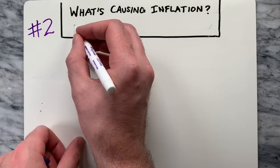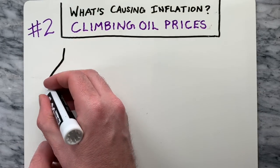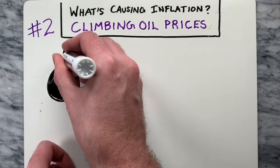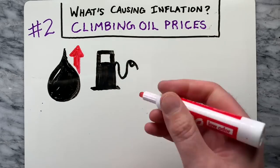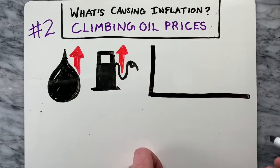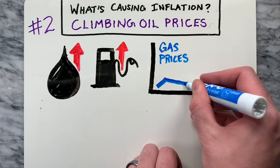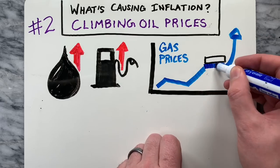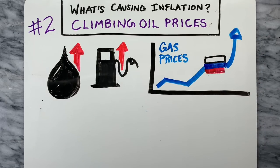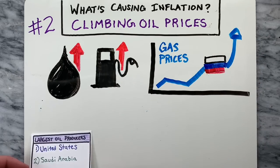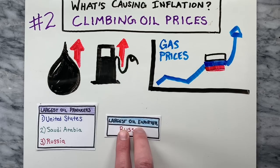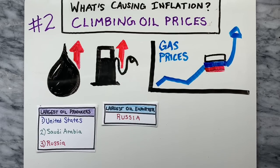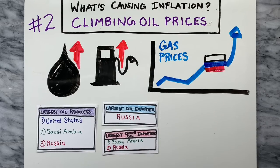Reason number two is due to climbing oil prices, which translates to climbing gas prices, ultimately causing intense cost pressures that affect a wide range of industries. Even before the pandemic, energy and gas prices were on the rise, but experts say the situation with Russia is making things worse. Russia is the third largest oil producer after the US and Saudi Arabia, but it is the world's largest exporter of oil to global markets and the second largest crude oil exporter behind Saudi Arabia, especially in Europe.